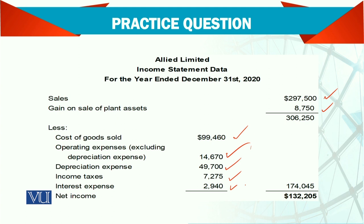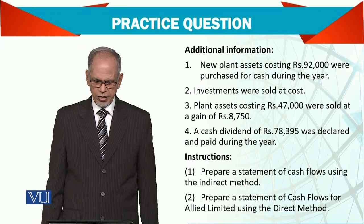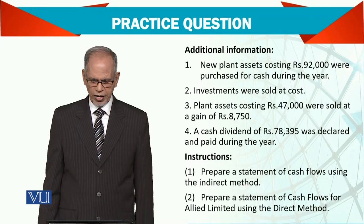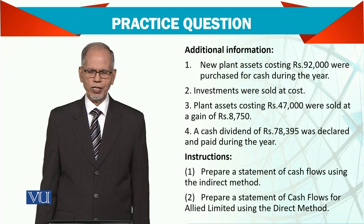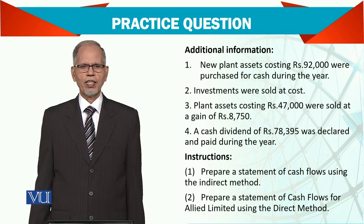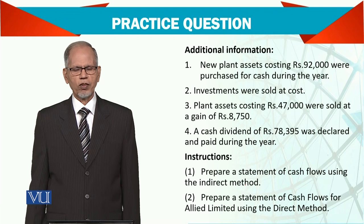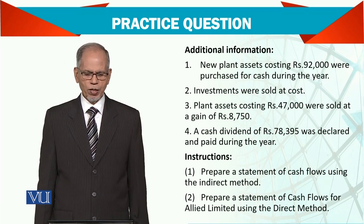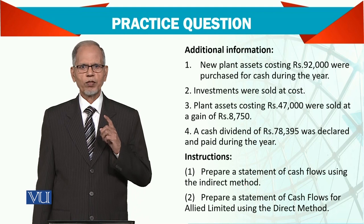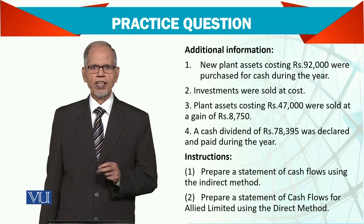This is a simple question kept simple so you can understand how these statements are prepared. In the additional information: new plant assets costing 92,000 was purchased for cash during the year — that is straightforwardly a cash outflow under investing activities.